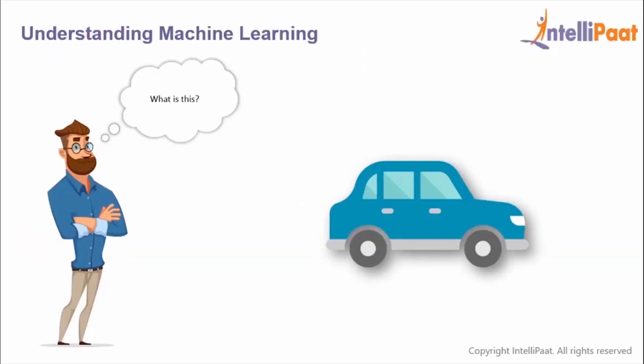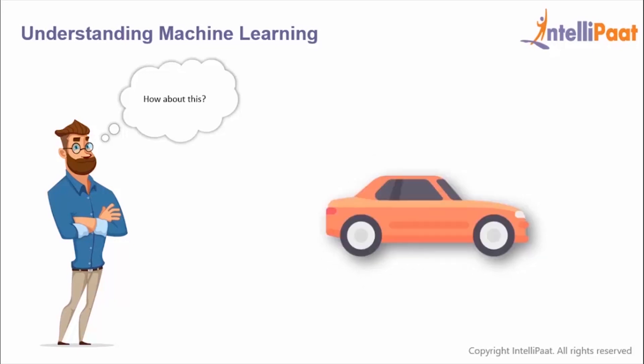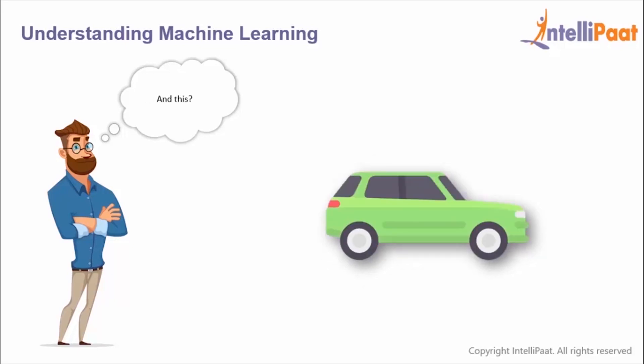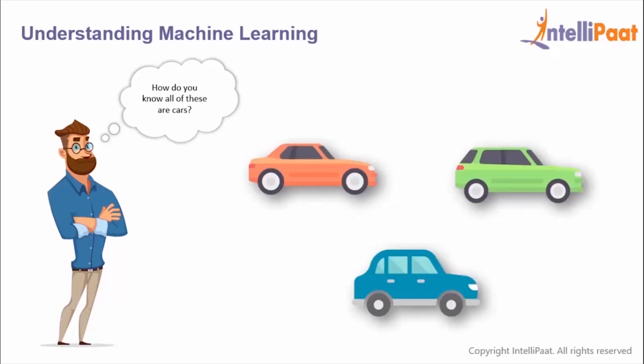Now we'll understand the concept of machine learning with this example. So what do you see in the slide? It's a car, isn't it? And how about this? Well, this is a car too, and this again — a car. Now how do you know all of these are cars? Well, as a kid you'd have come across a picture of a car and been told by your kindergarten teacher or your parents that this is a car.